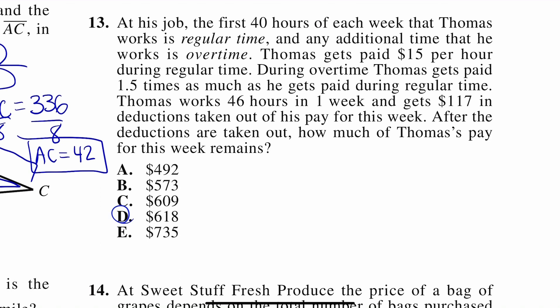At his job, the first 40 hours of each week that Thomas works is regular time. Any additional time that he works is overtime. Thomas gets paid $15 per hour during regular time. During overtime, I'm going to start underlining things because this is a lot going on. During overtime, Thomas gets paid one and a half times as much as he gets paid during regular time. So he worked 46 hours in one week. And $117 gets deducted. So that means it gets subtracted for those of you who haven't had a paycheck in their life, get money taken out. After the deductions are taken out, how much of Thomas's pay for this week remains?